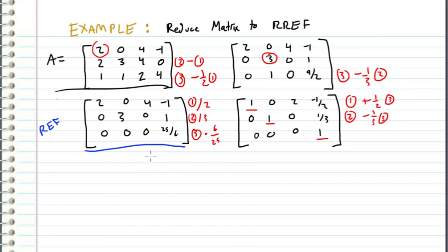And once we perform these operations, we get 1, 0, 2, 0, 0, 1, 0, 0, 0, 0, 0, 1.